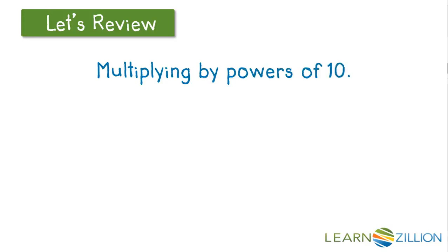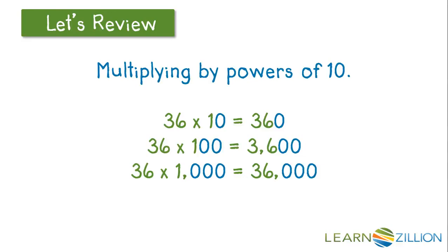It's also important to remember the powers of 10. If we multiply 36 by 10, we get 360. 360 is 10 times bigger than 36. 36 times 100 equals 3600. Notice this time we added two zeros. 3600 is 100 times bigger than 36. 36 times 1000 is 36,000.